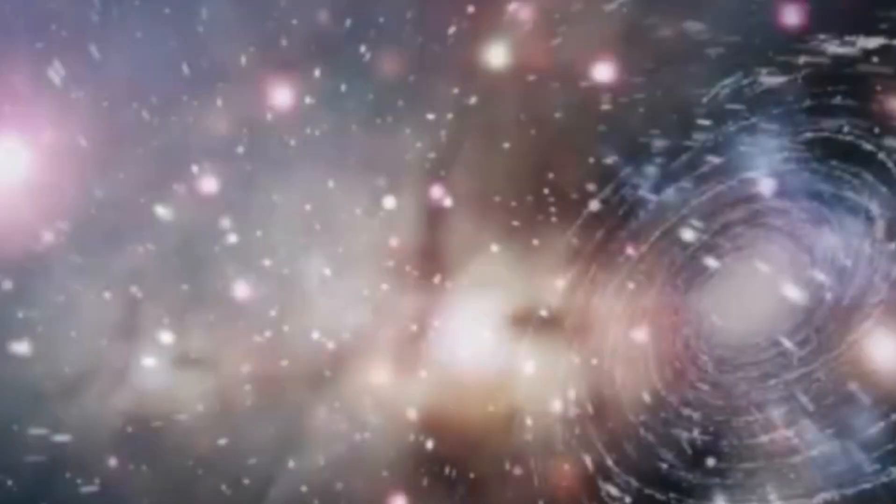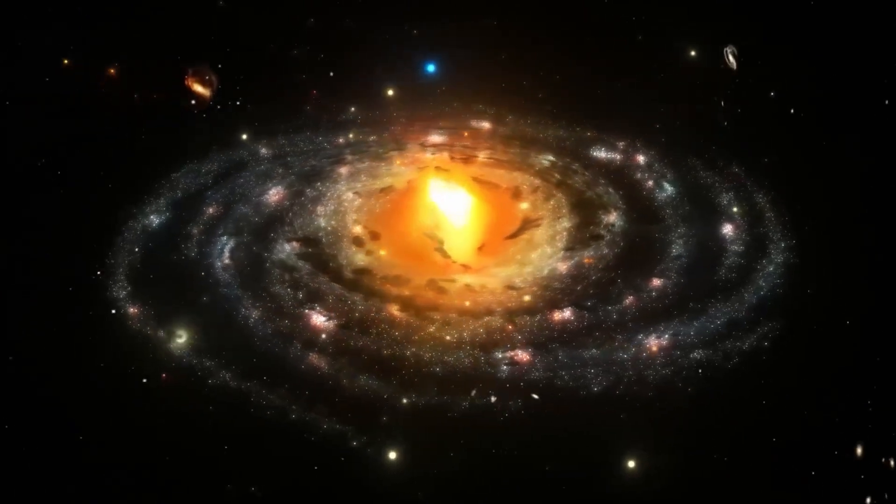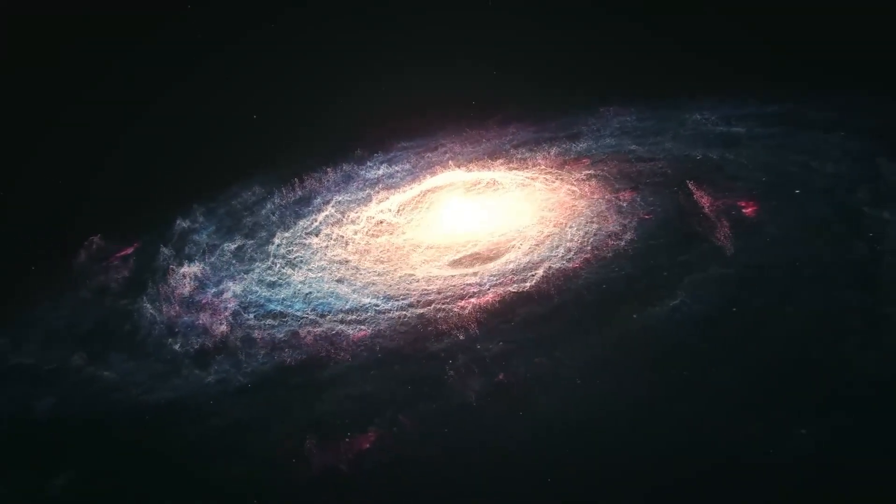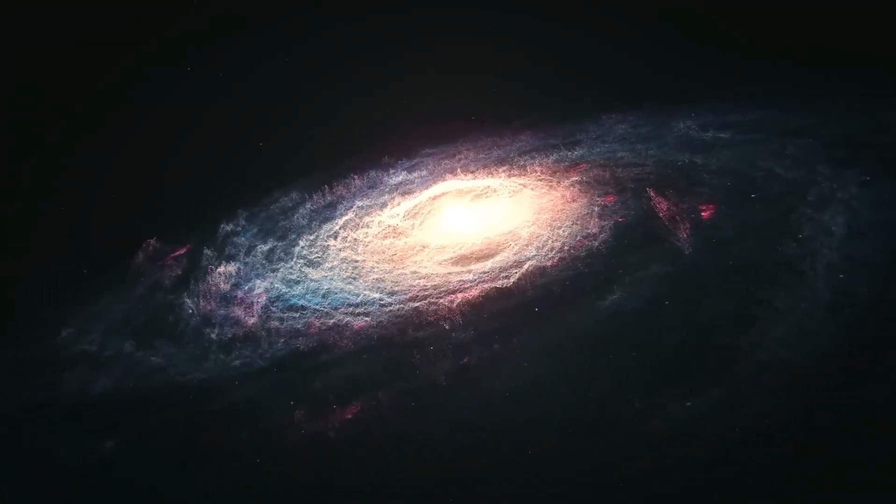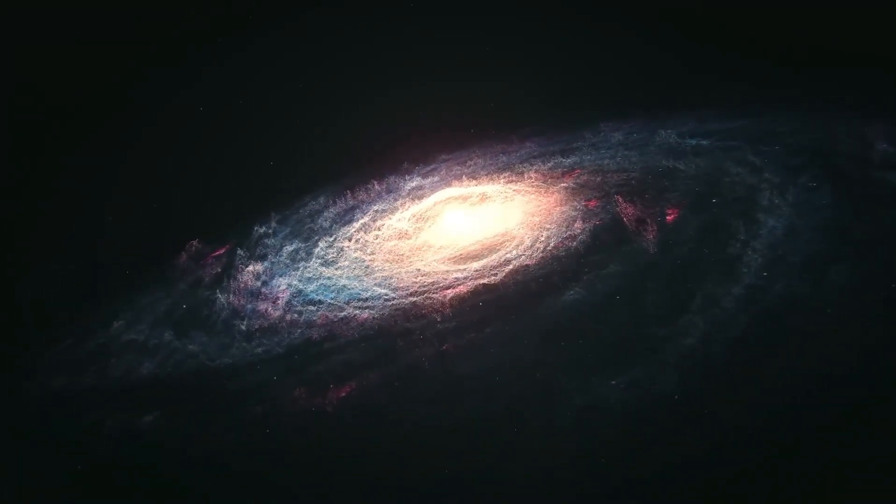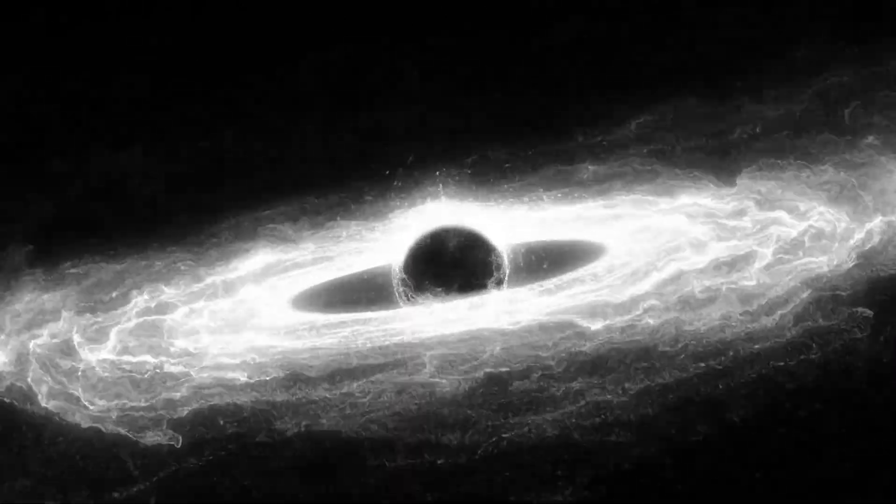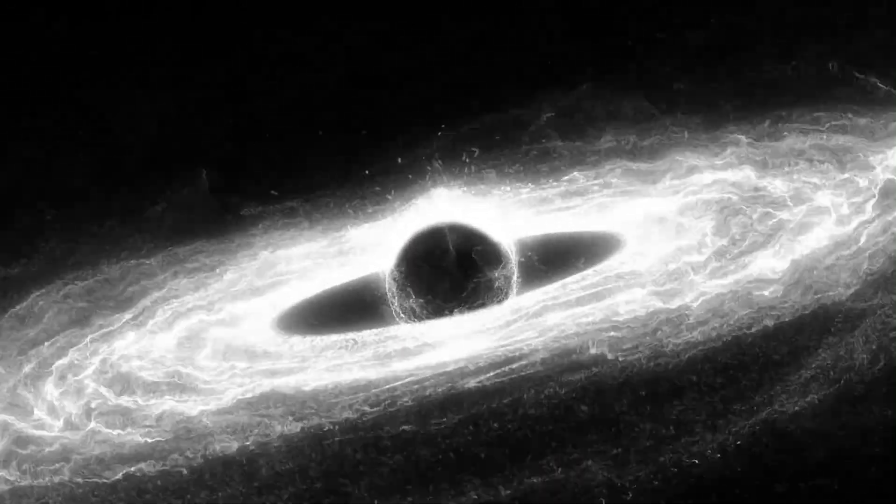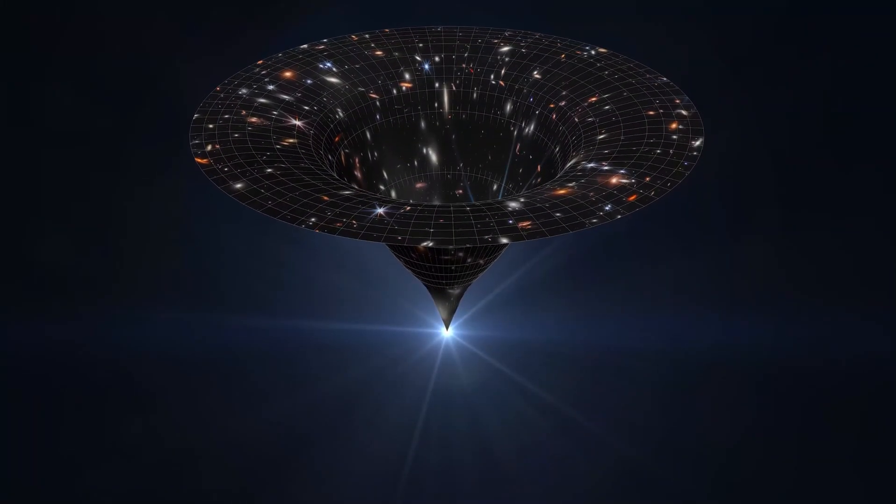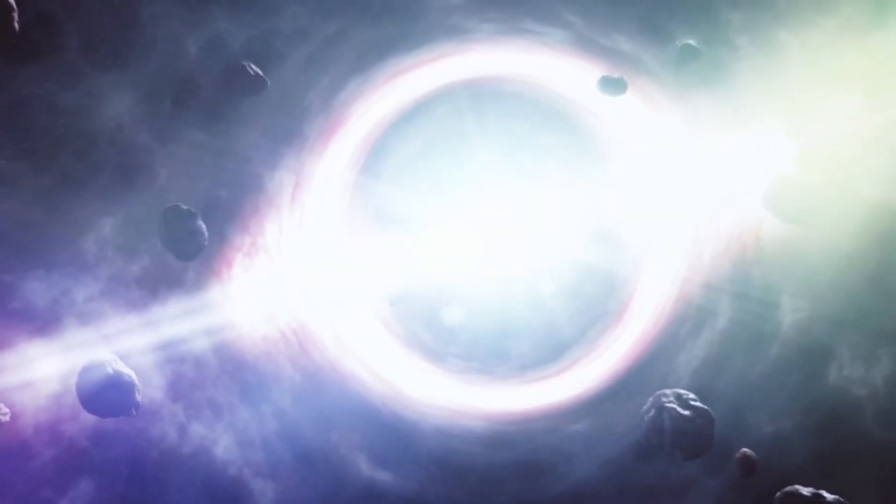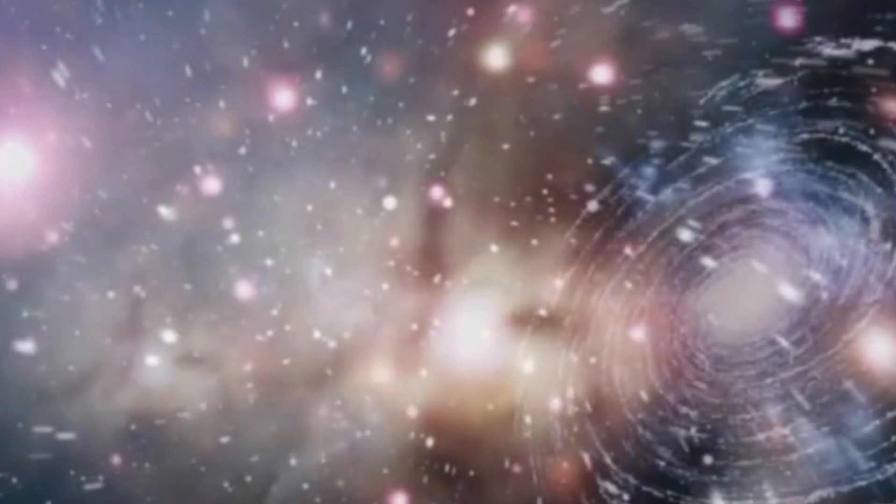The first planet in line is the blue gas giant HD 189733 b. It's slightly larger than Jupiter, but unlike the largest planet in the solar system, HD 189733 b is only 2,905,798 miles away from its star. For comparison, the distance between Jupiter and the Sun is almost 166 times greater. Therefore, one orbital period of HD 189733 b around its star takes only 2.2 days with an orbital speed of 134,000 miles per hour.